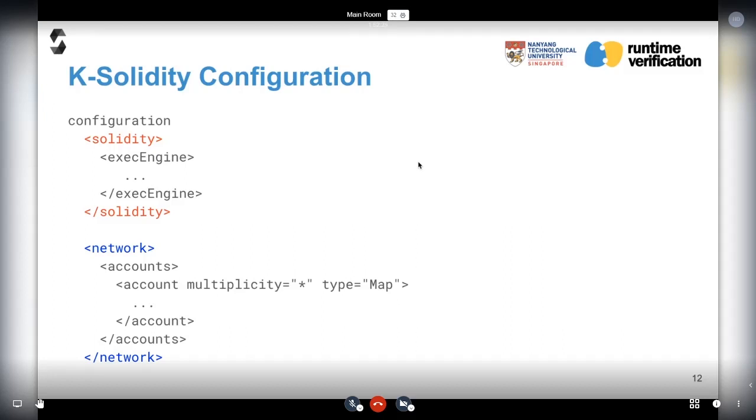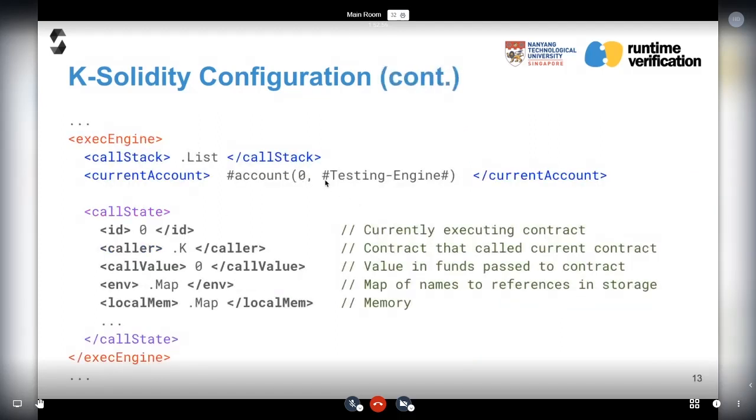To do so, you need to define two components. The first component is the configuration, which indicates the status or state of smart contracts. If you look into the configuration file, you'll find it has two main parts. The first part, marking the red color, is for execution of a smart contract instance, while the second part, marking the blue color, is for recording the whole blockchain network status. Inside the execution engine cell, we have several important cells - the call stack for function calls, call state including the ID (address of the current instance), caller ID, call value, storage, local memory, etc.